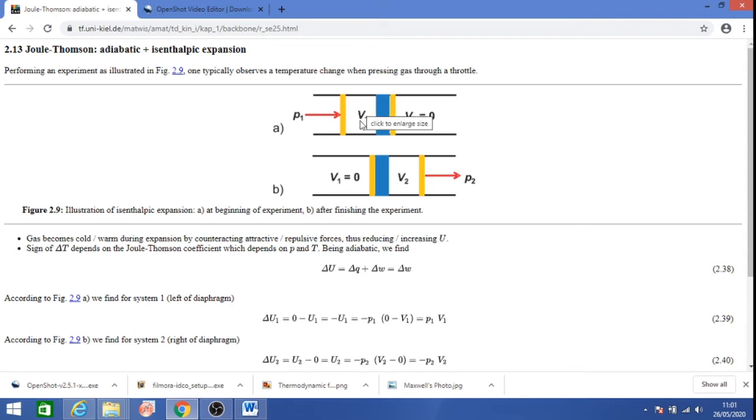What happens when the gas on the left side is compressed? The gas molecules are forced to move through this porous plug region into the right side. Because of this, the gas molecules are exerting a pressure on the piston.